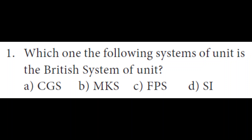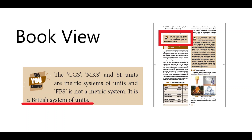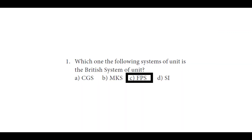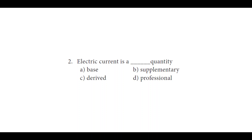We will see this portion in the textbook. In the box message which explains the question: the CGS, MKS, and SI units are metric systems of units, and FPS is not a metric system — it is a British system of units. So it is very clear that FPS is the British system of unit. The answer is C: FPS.